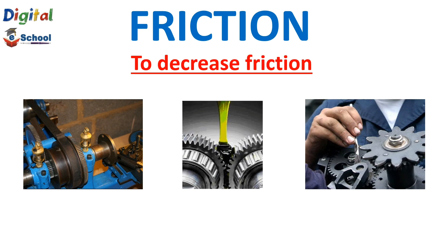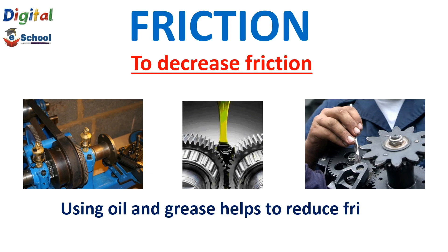How can we reduce friction? We can use oil, grease, and graphite to decrease friction in the moving parts of machines. When we apply oil, grease, or graphite, a thin layer is formed between the moving surfaces. Since the surfaces are rough and have irregularities, this thin layer avoids interlocking of surfaces. When there is no interlocking, the movement becomes smooth and the efficiency of the machine increases.